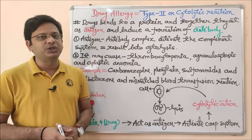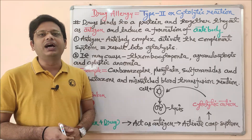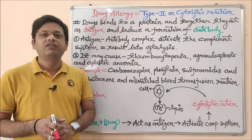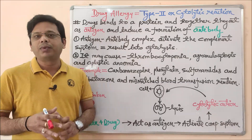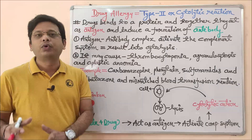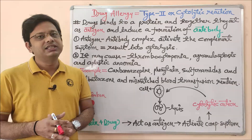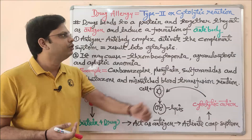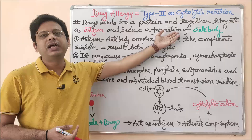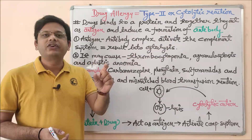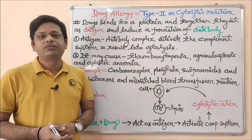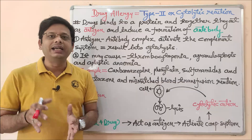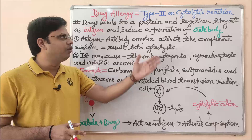In short, any agent which activates the function and production of antibodies is known as an antigen — it is not a part of your body. Your body will not accept it, so the body will try to protect itself by fighting this antigen. To fight it, there will be initiation of the body's defensive system, that is the antibody. After the complex formation of the drug with the protein, an antigen is formed, and our body starts forming antibodies.